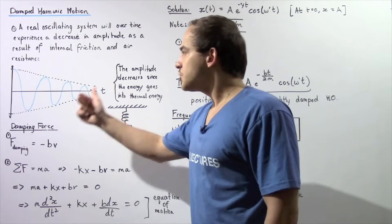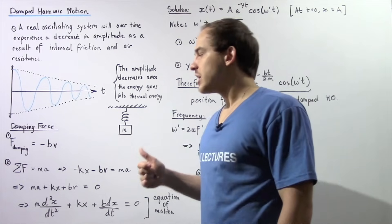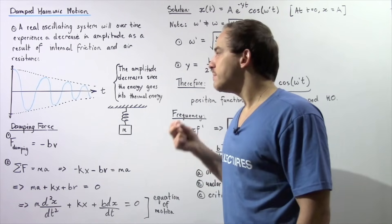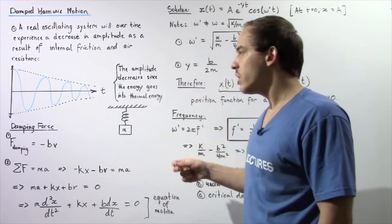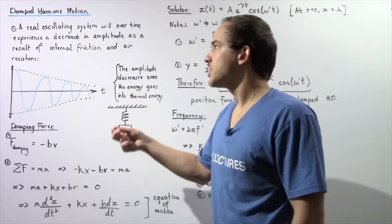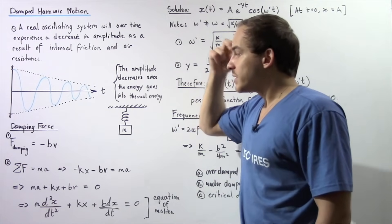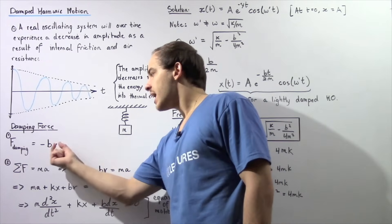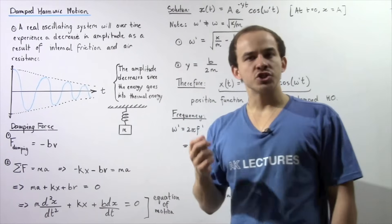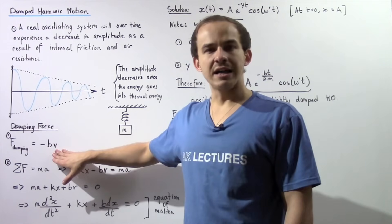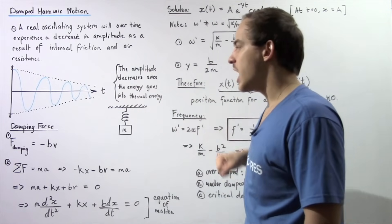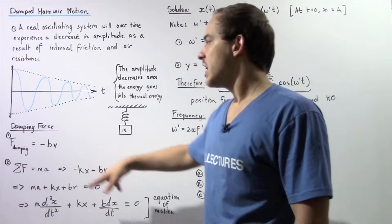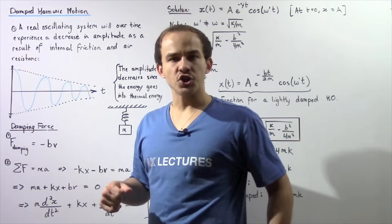Let's talk about something called the damping force. The damping force is the force that acts on our object to impede the oscillations of the object — so the damping force creates the damped harmonic motion. The damping force is equal to negative B times V, where B is our proportionality constant and V is the velocity of the oscillation of the object. So if the oscillation velocity of our object increases, the damping force also increases.